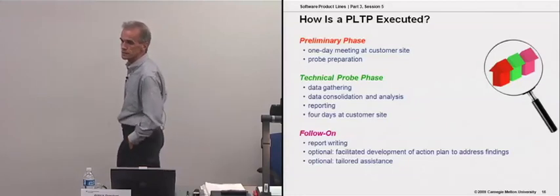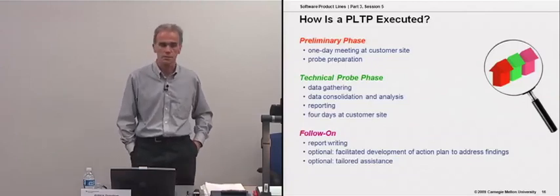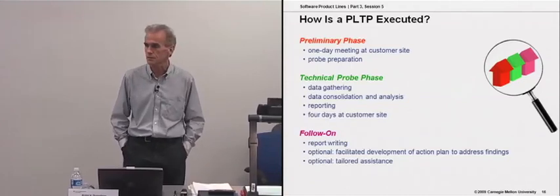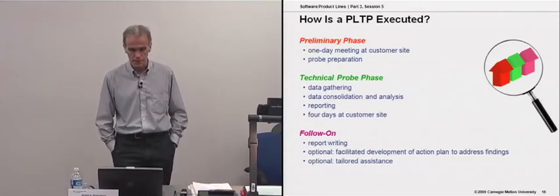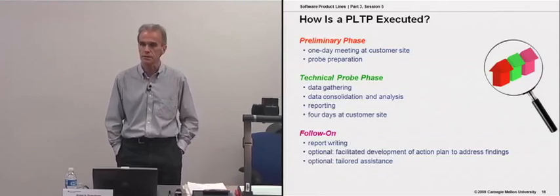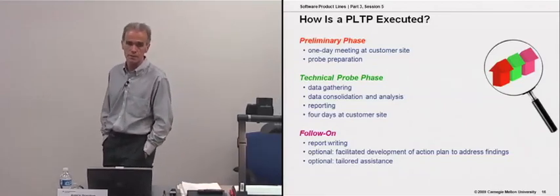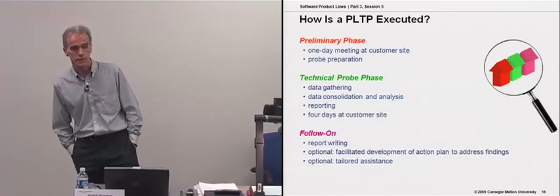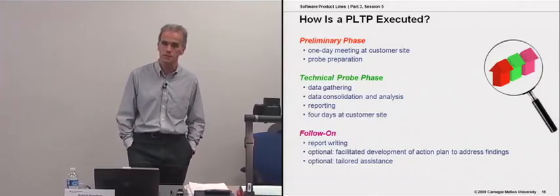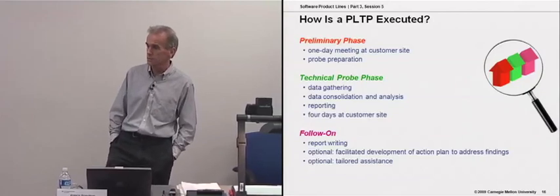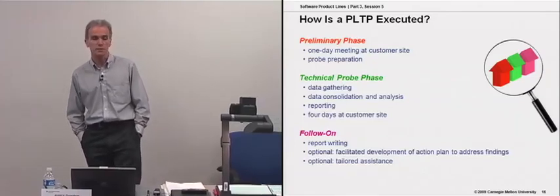Our method takes place in two phases. The preliminary phase is a one-day on-site meeting with the product line manager or designated product line manager, business people, and the product line architect — no more than about half a dozen people. Then about a month later — and it takes at least that long to arrange the logistics for the main technical probe phase — we conduct the series of interviews, making sure everybody is lined up and available at a particular location at a particular time. This gets tough in large distributed organizations; in some cases we've done probes with people phoning in from France, Germany, and Singapore.